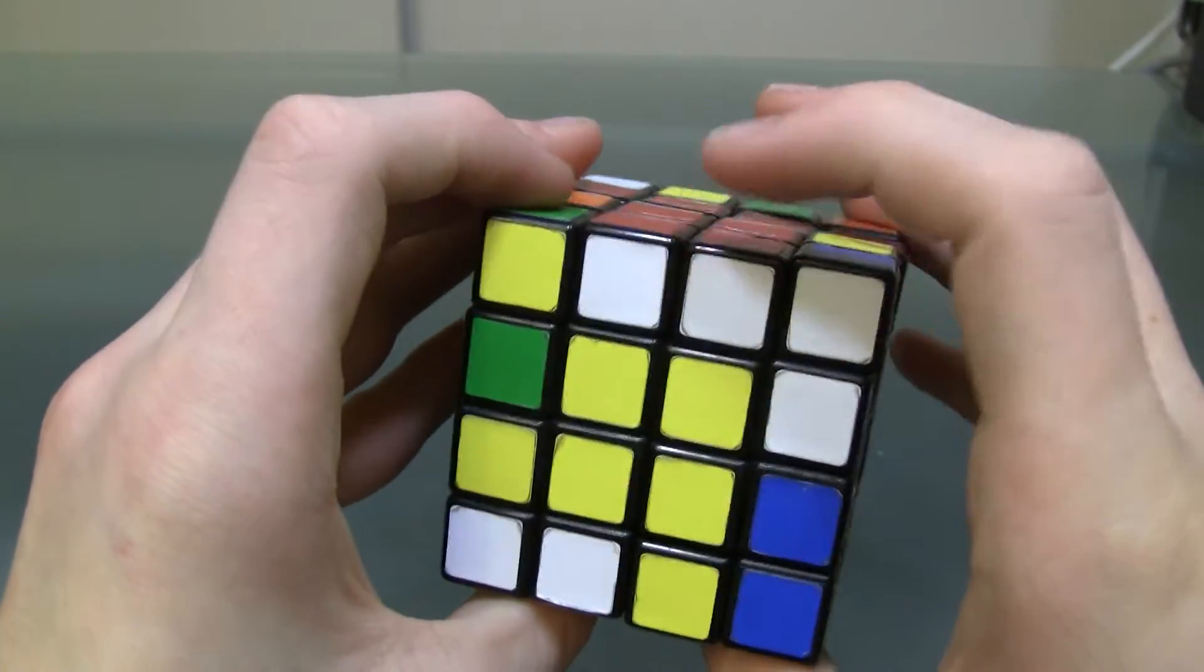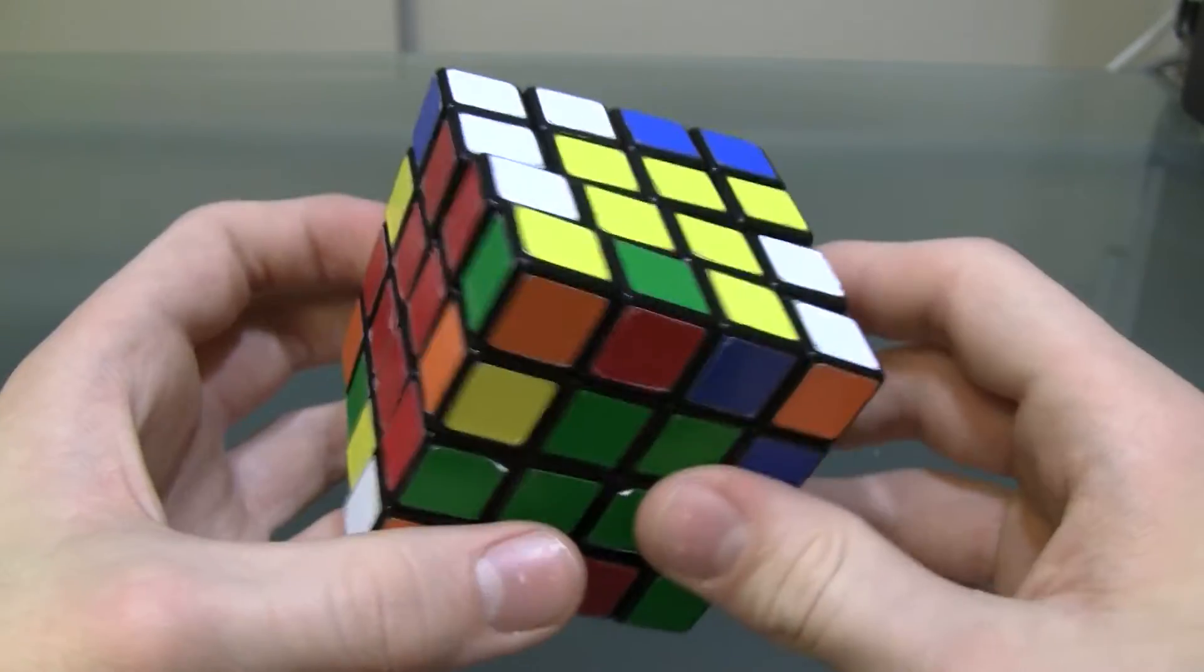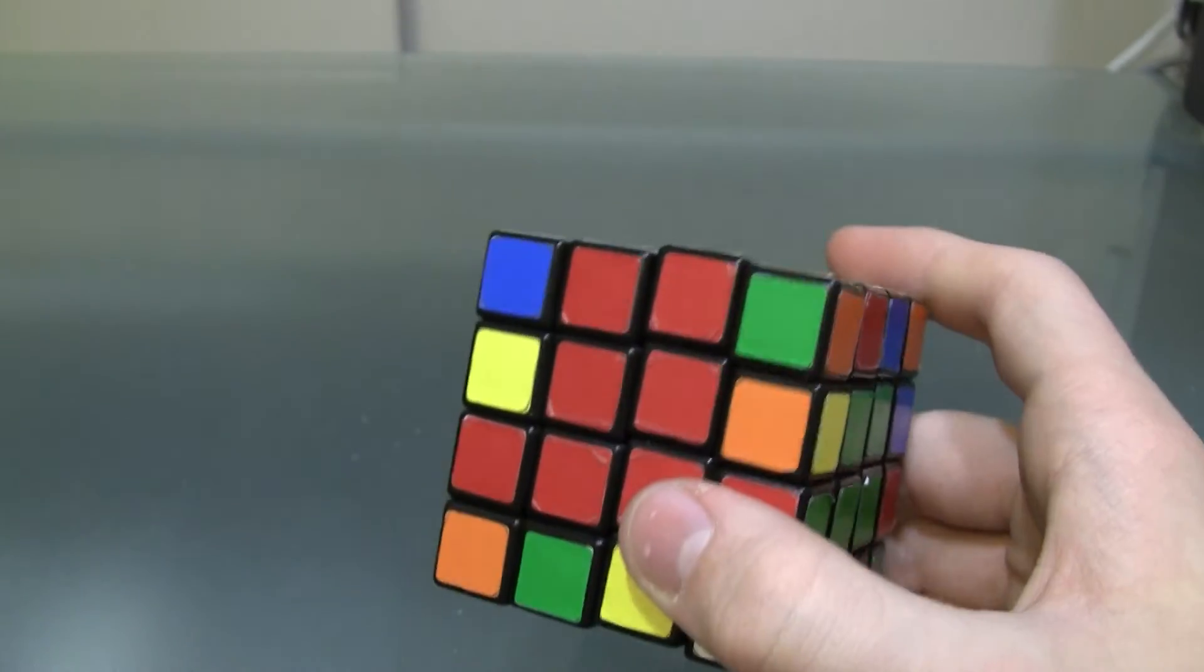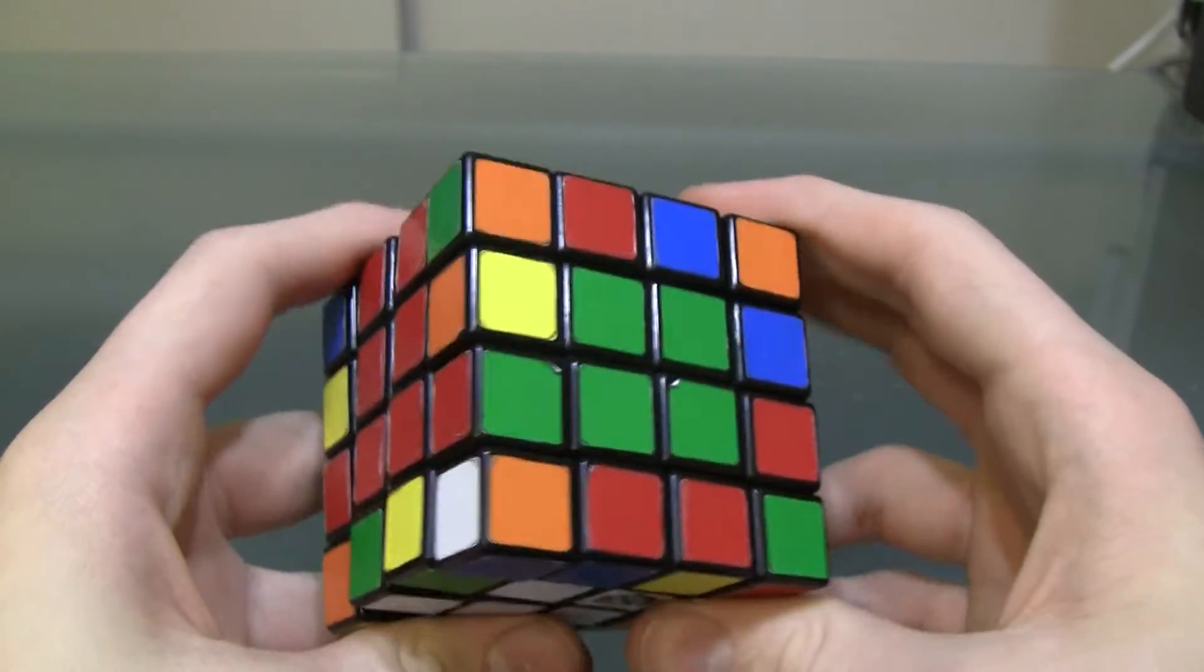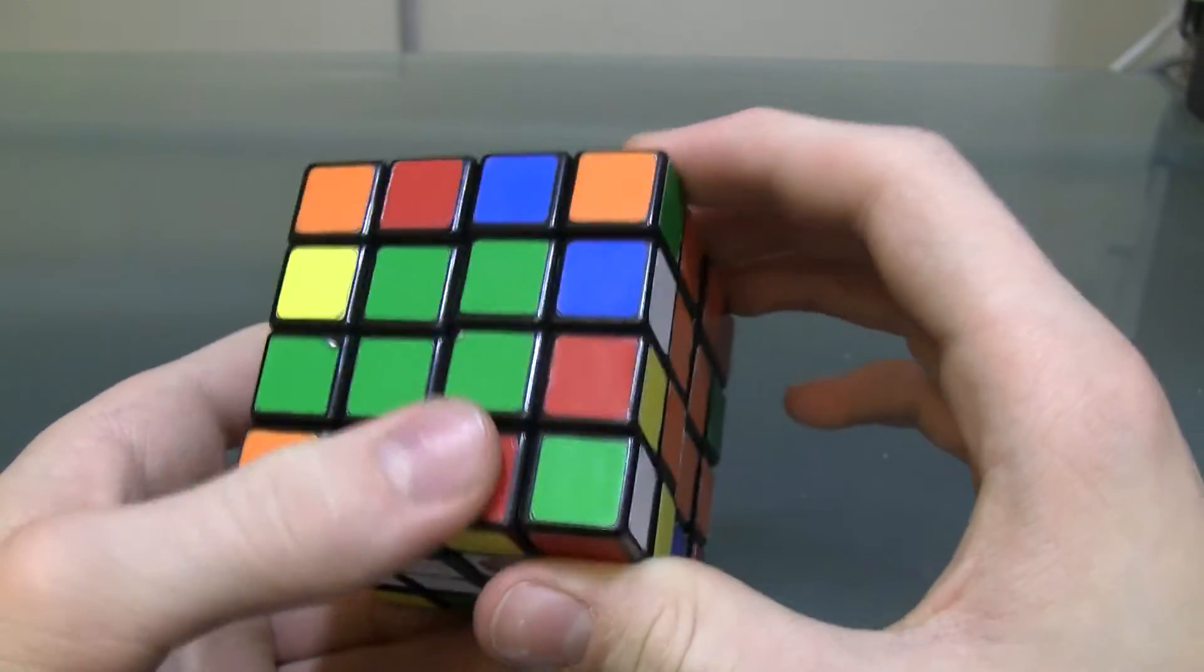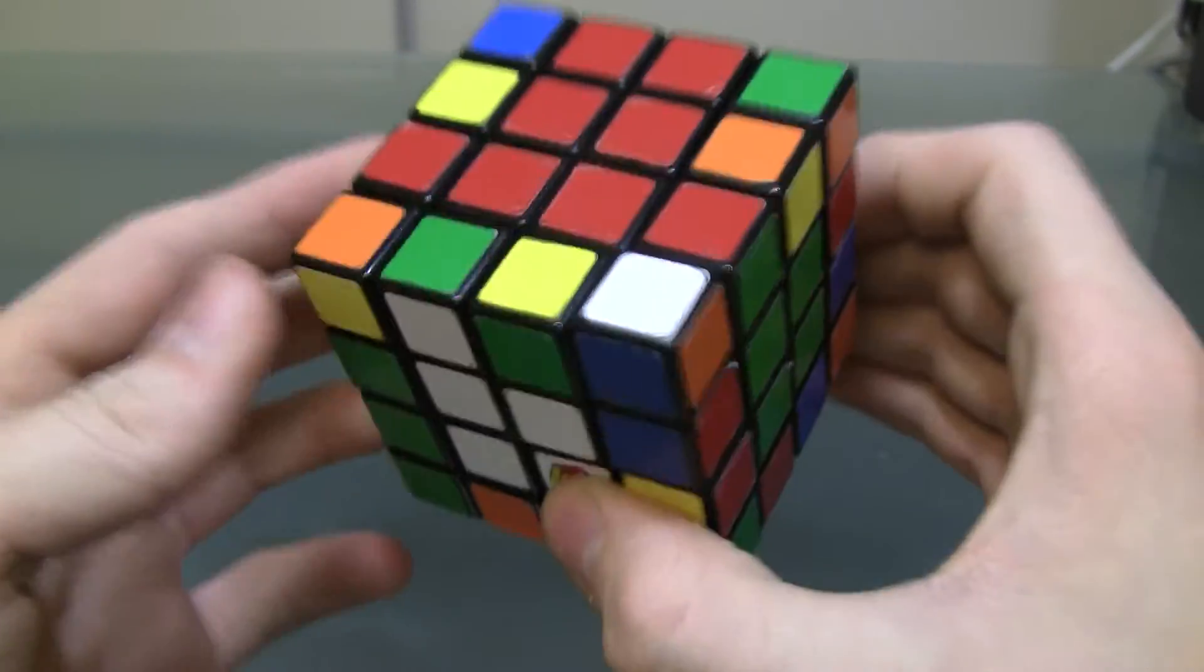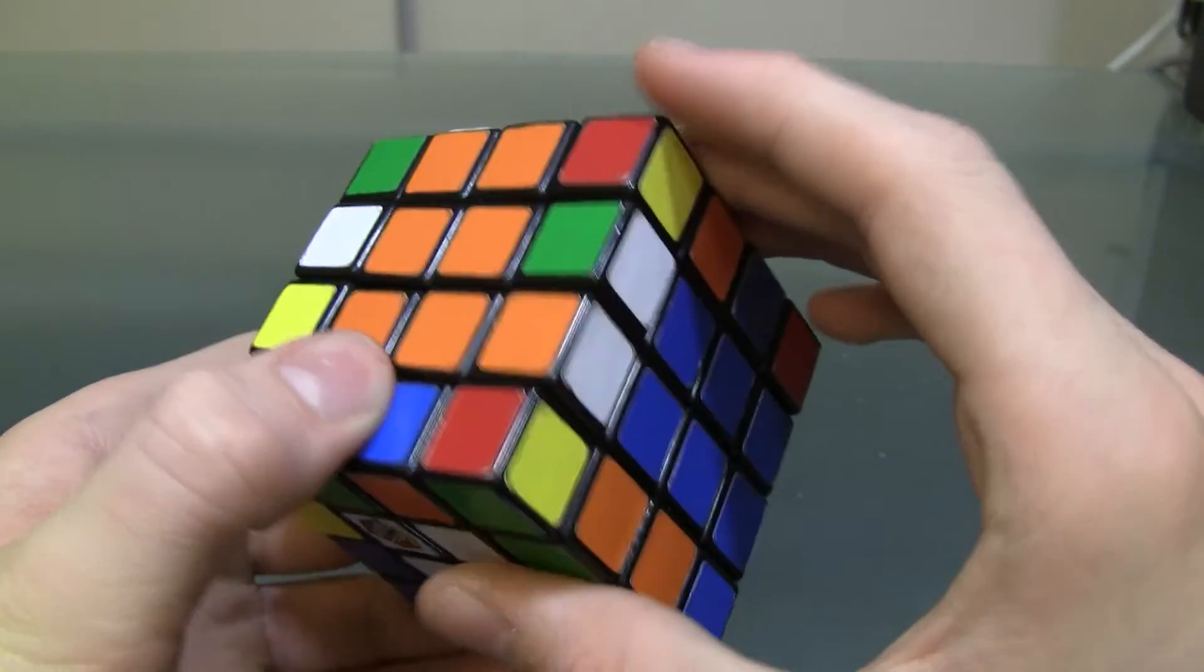And so, now we have one matched up dedge piece. And so, do that with the rest of them. There are a total of 12 edges on the cube. And do as many as you can. If you're lucky, you'll be able to pair up all 12 without any problems. However, if you encounter a parity error, which I'll go over in the next step, you'll only be able to pair up 10 of the edges.